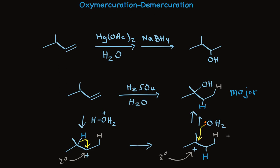So you can see that during a synthesis, when we want to add water to an alkene and avoid a rearrangement, it's better to use the oxymercuration-demercuration two-step approach.